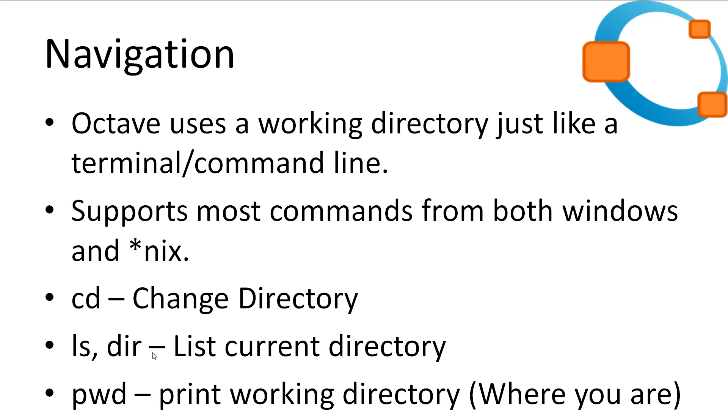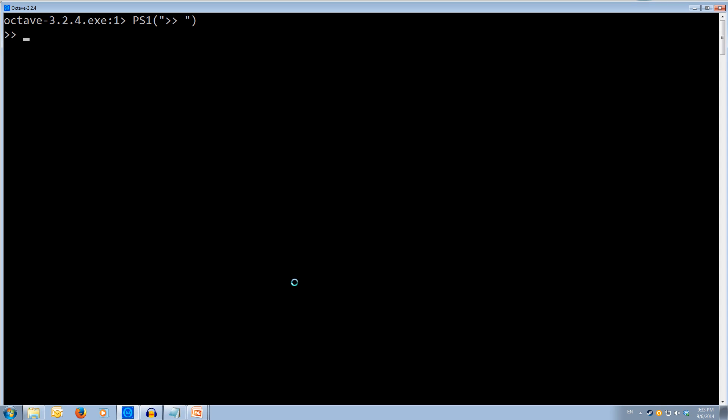So let's jump over to Octave and navigate to our files. Ok so over in Octave, the current working directory is pwd so we've got c, octave, three, two, three, two, four, gcc and the bin folder. So that's not where my files are located. In fact, they're located in the e drive and they're also in a folder called oct data.